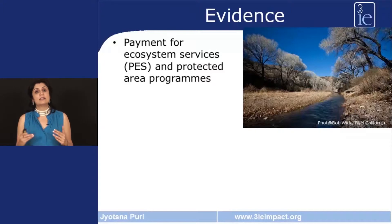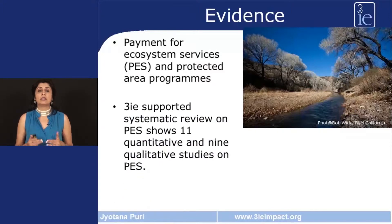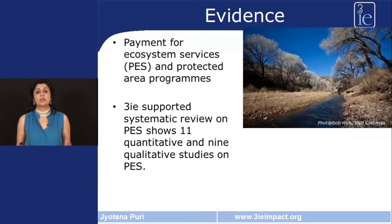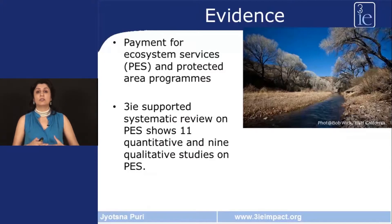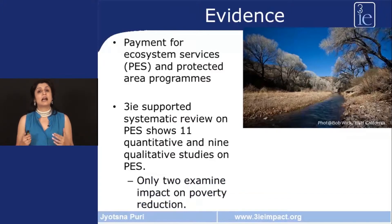In a recently supported 3IE systematic review, we found that the evidence in this area — specifically in payment for ecosystem services — was very little. We found that there were only 11 studies that quantitatively showed the impacts of these PES systems and only 9 qualitative studies. Only 2 of these studies actually looked at the impact on poverty reduction.